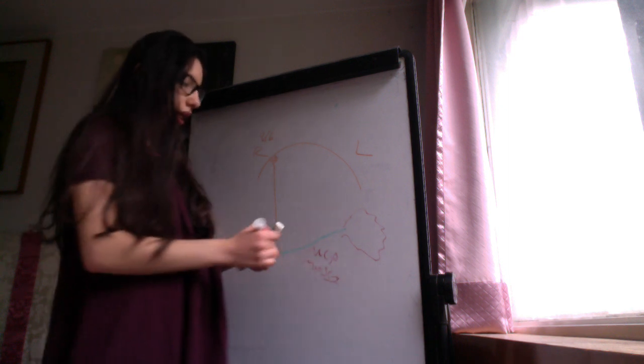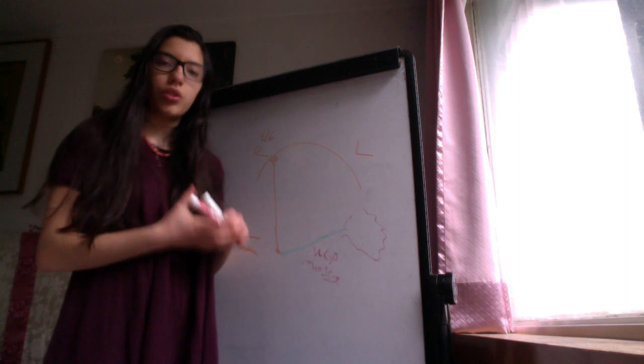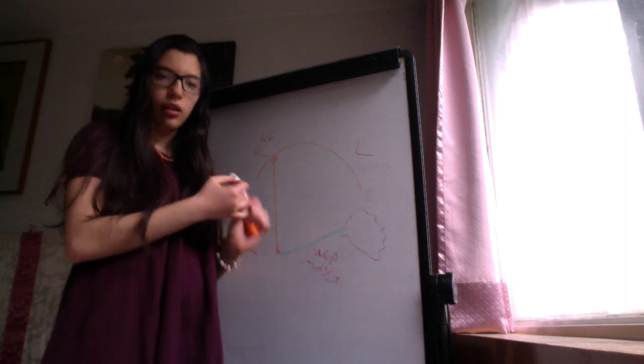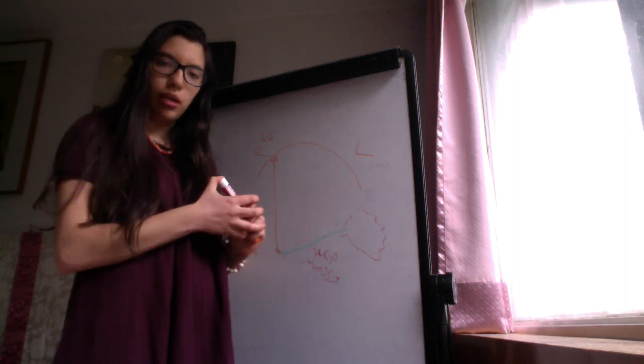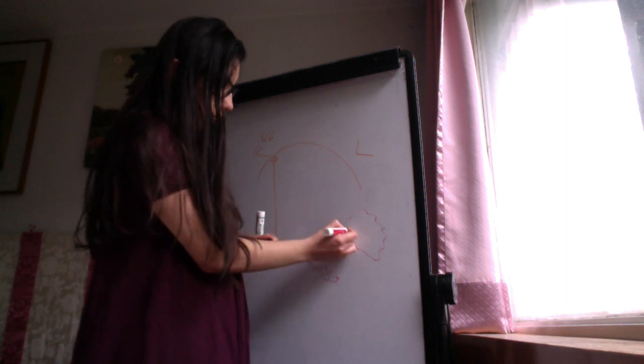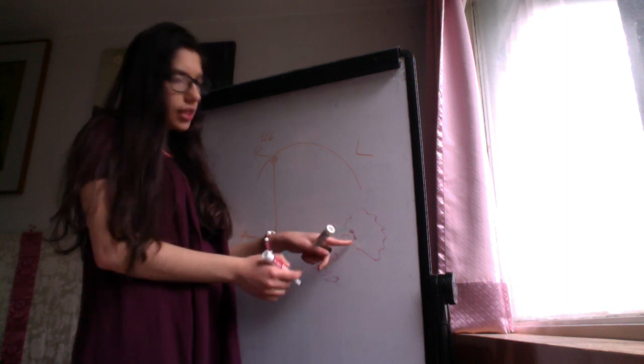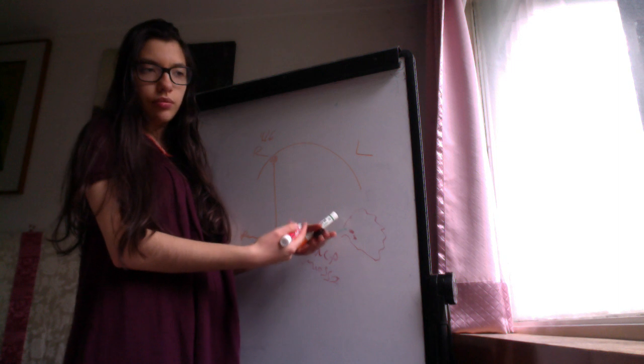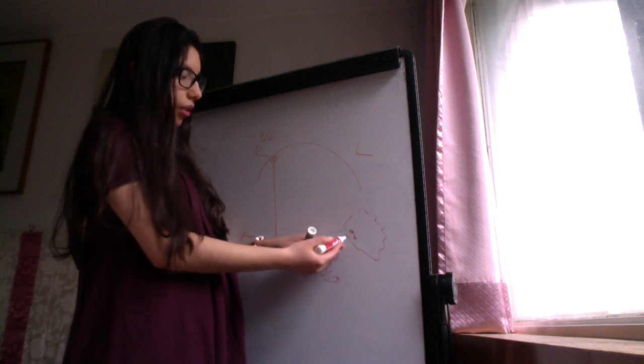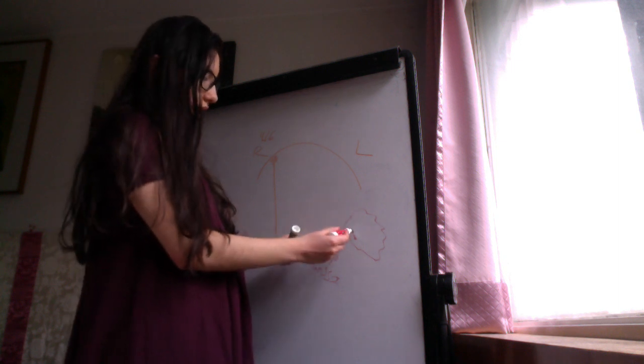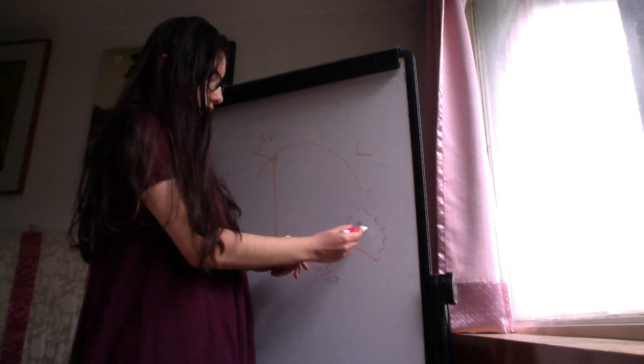Mossy fibers enter and go to the granular and Golgi cells. Here I care about the granular cells. The granular cell then stimulates the Purkinje cells, so from granular cell to the Purkinje cell.